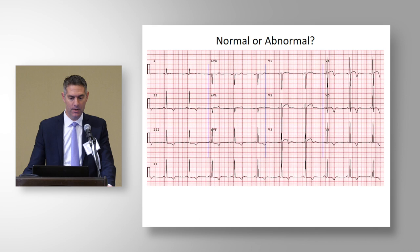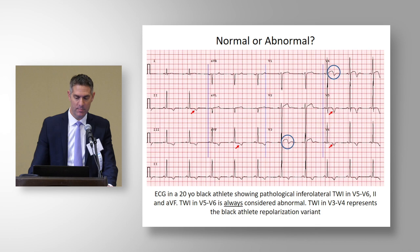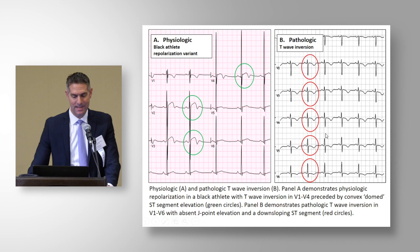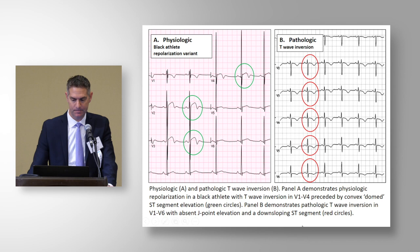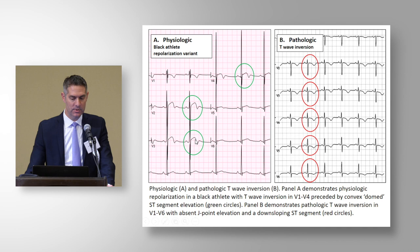When you look at this ECG, is it normal or abnormal? Pretty quickly our eyes may go to the inferolateral leads where we can see T-wave inversion that would make this abnormal. In this black athlete, there may be some normal repolarization as well as the abnormal findings. The black athlete physiologic repolarization variant is always confined to leads V1 through V4. In contrast, pathologic T-wave inversion extends beyond V4 into V5 and V6. Also, for the pathologic example, the J point and ST segment is flat or downsloping — in contrast to a J point elevation with a domed or convex ST segment.